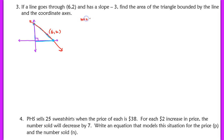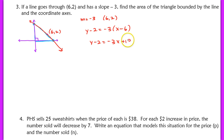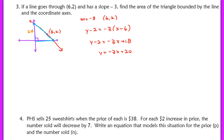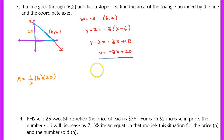We know the slope is negative 3 and the line goes through (6, 2). Writing in point-slope form: y minus 2 equals negative 3 times x minus 6. Converting to slope-intercept form, we see the y-intercept is 20, so the height of the triangle is 20. To find the base, we find the x-intercept by setting y equal to 0: negative 3x plus 20 equals 0, giving x equals 20/3.